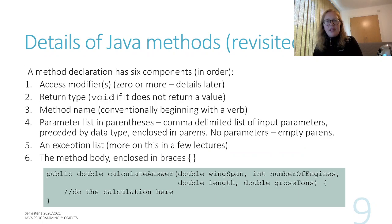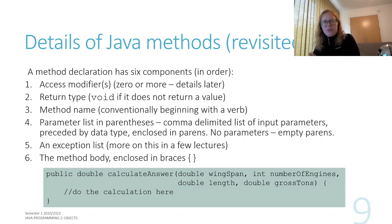Just to remind you, here's what Java methods look like — we've dealt with methods before. Methods that are part of a class work exactly the same as methods that aren't part of a class, except that inside the method you can also use the fields — the fields are also in scope.